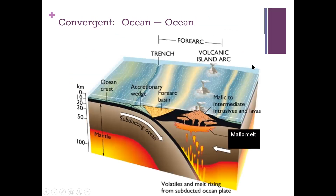In convergent ocean-to-ocean subduction, it's a bit more complex because both crustal layers are very dense. You get a fore-arc basin, but the same volcanic complex occurs in this setting.